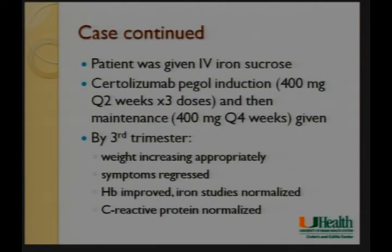In our patient, we gave her intravenous iron — which is safe in pregnancy — because she was iron deficient. We chose to give her certolizumab pegol, an anti-TNF agent that is subcutaneous. By the third trimester she was fortunately gaining weight appropriately, her symptoms had resolved, her hemoglobin had nearly normalized, and her C-reactive protein had normalized, suggesting resolution of inflammation.